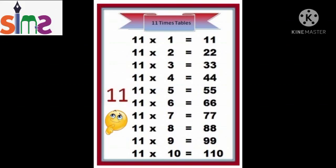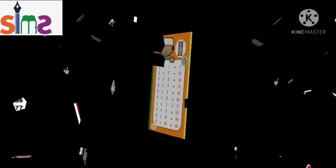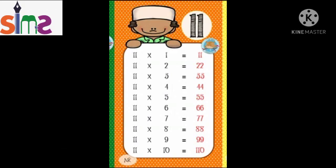11 ones are 11, 11 twos are 22, 11 threes are 33, 11 fours are 44, 11 fives are 55, 11 sixes are 66, 11 sevens are 77, 11 eights are 88, 11 nines are 99, 11 tens are 110. So kids, today in maths you all have learned table of 10 and 11.